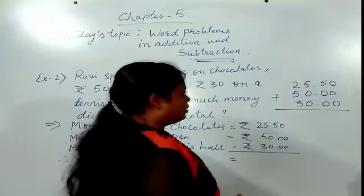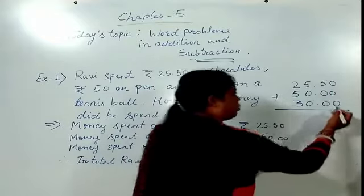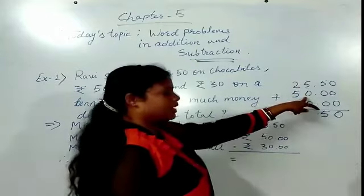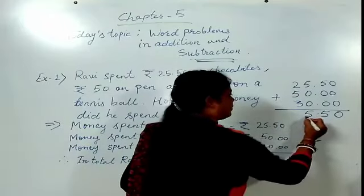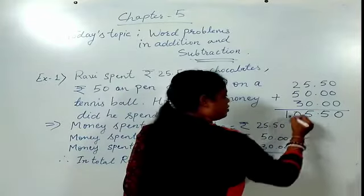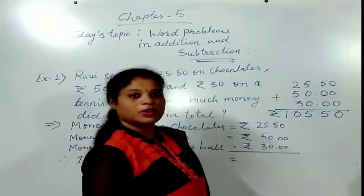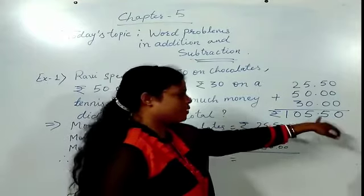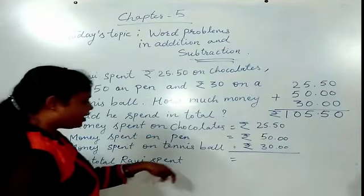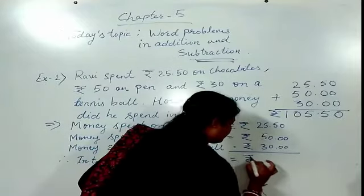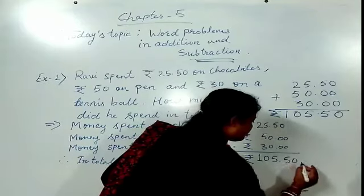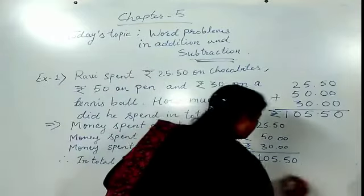So we will write 25.50, then for pen 50.00, and then tennis ball 30.00. We have to do the sum — addition. 0 plus 0 plus 0 is 0. 5 plus 0 plus 0 is 5. Then 5 plus 0 plus 0 is 5. 2 plus 5 is 7, and 7 plus 3 is 10. So in total, Ravi paid rupees 105.50.